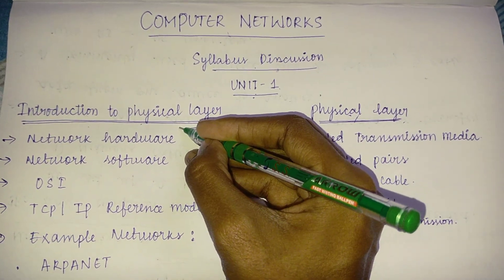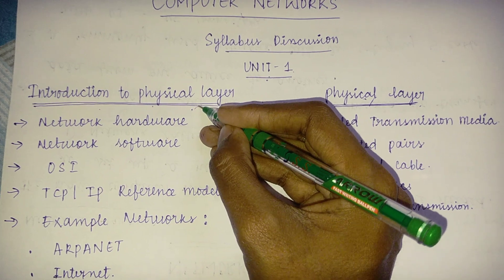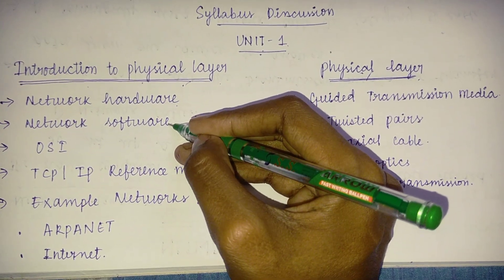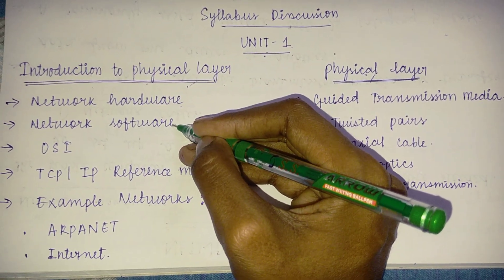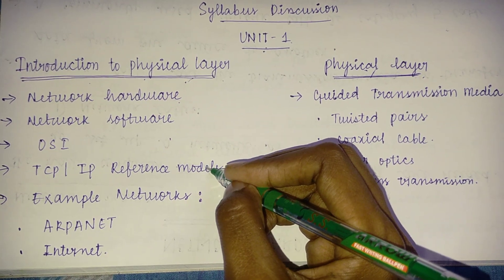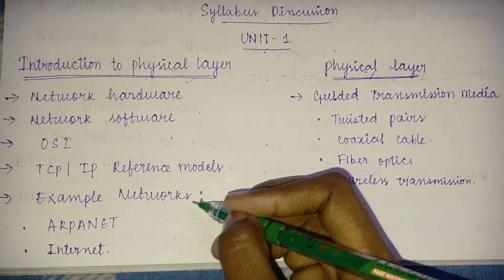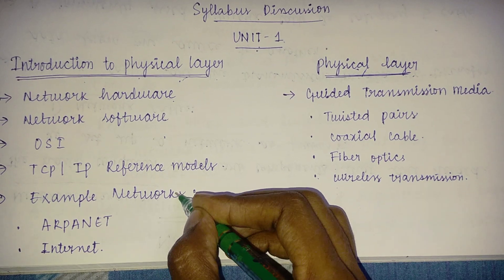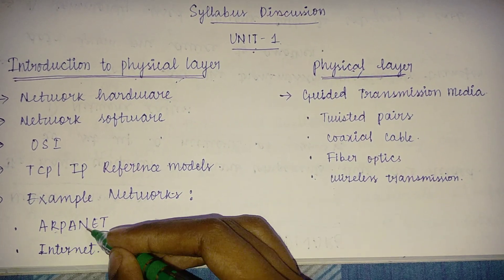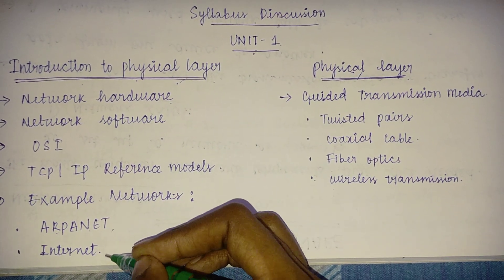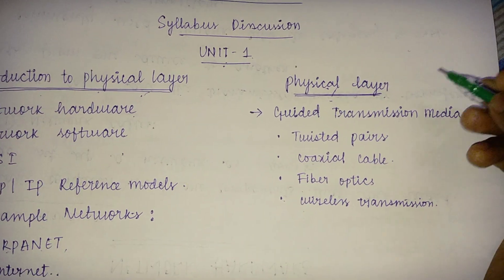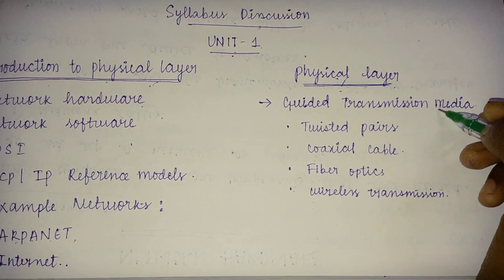The first part, introduction to the physical layer, covers the following topics: network hardware, network software, OSI reference model, TCP/IP reference model, and example networks — specifically ARPANET and the Internet.